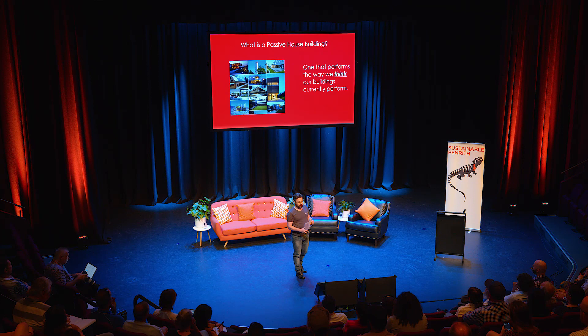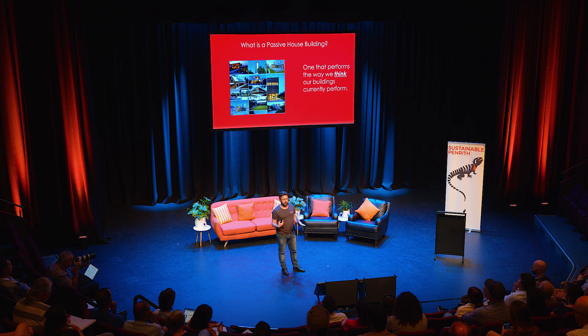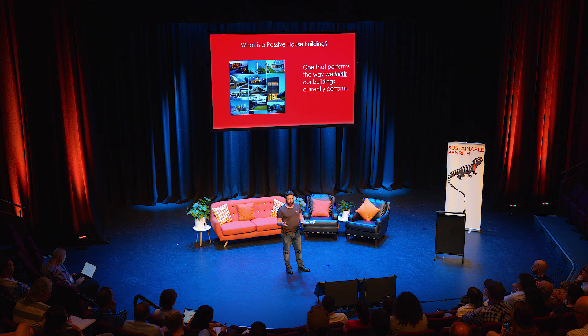What is a passive house building? At its most basic it's simply one that performs the way we think our homes currently perform. So when we close up our windows and our doors to keep the heat out in summer or to keep the warmth in winter, we're actually not. Our buildings are very, very leaky. Most houses of an average size will have at least an open window's worth of leaks, if not an open door or more for larger ones. So we're not actually isolating the indoor climate from the outdoor climate. This of course requires extra energy — heating and cooling — to keep the home comfortable.